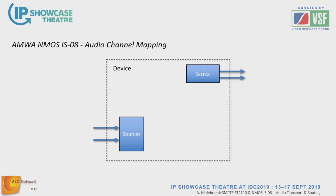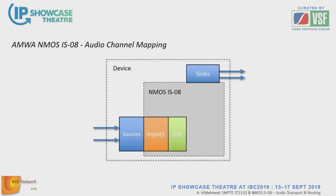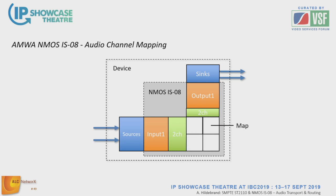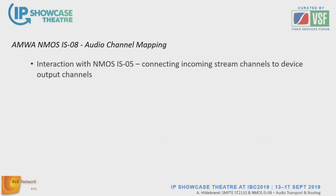IS-08 gives you the ability to map single channels to particular available outputs. Here's the IS-08 object model: a device has inputs and outputs. The model covers an input stage — in this example with two-channel capability — an output stage with two-channel capacity, and a matrix or patch field which is also accessible and defined within IS-08. Through IS-08, you can tell the input stage to patch relevant channels into the output stage where discrete output connectors are waiting for data.